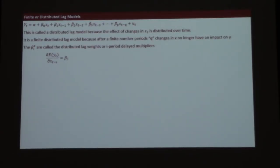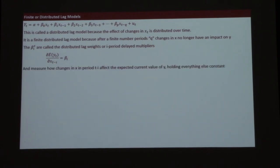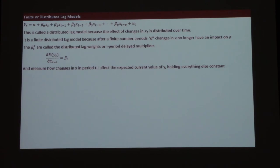The finite distributed lag model includes lag values of x. The betas are called distributed lag weights or delayed multipliers. In essence, beta_i is the effect on y — the change in y — resulting from a change in x, i periods ago, holding everything else constant. So it's the effect on y today of a change in x i periods ago.